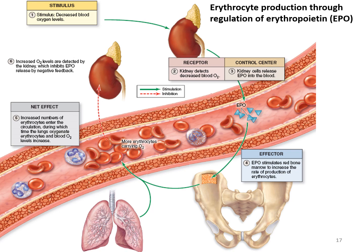Erythropoietin (EPO) is a hormone that influences production of red blood cells. The stimulus for EPO release is decreased blood oxygen levels. When blood oxygen decreases, cells in the kidneys detect this and release EPO into the blood. EPO stimulates the red bone marrow to increase the rate of erythrocyte production. More red blood cells mean higher blood oxygen levels, and once oxygen levels return to normal, the kidney stops producing erythropoietin — a negative feedback loop.